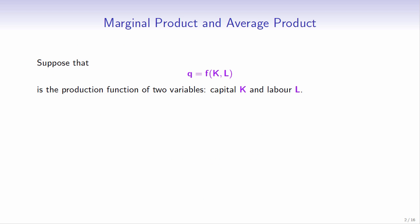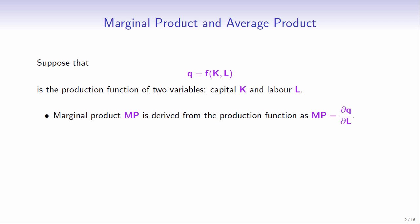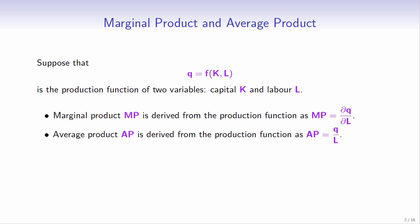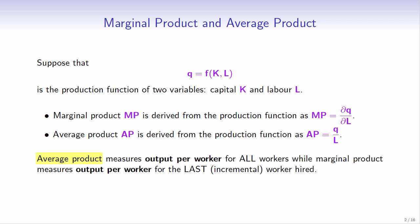Suppose that Q is the production function of two variables, capital K and labour L. Marginal product is derived from the production function as a partial derivative of Q with respect to L. Average product is derived from the production function as Q over L. Average product measures output per worker for all workers, while marginal product measures output per worker for the last worker hired.